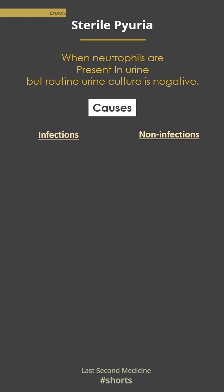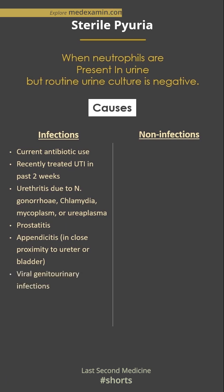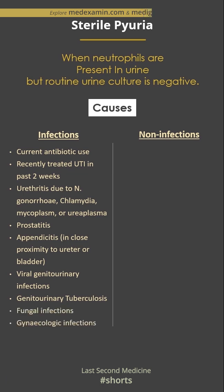Under infections, causes include current antibiotic use, recently treated UTI, urethritis due to certain organisms, prostatitis, appendicitis in close proximity to the urinary tract, viral genitourinary infections, genitourinary tuberculosis, fungal infections, and gynecologic infections.